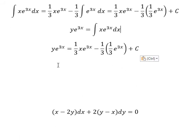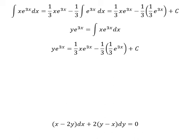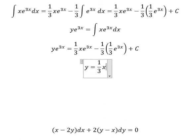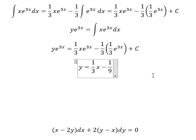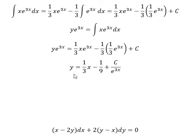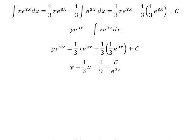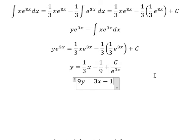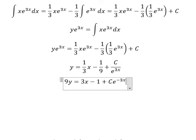Next, we divide both sides by e to the power of 3x. Number 3 and number 3 give us number 9. Next, we multiply both sides by 9. And this one we can write as c·e to the power of negative 3x. This is the final answer.